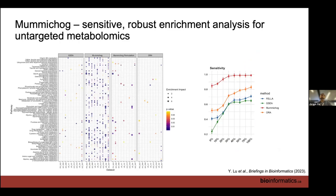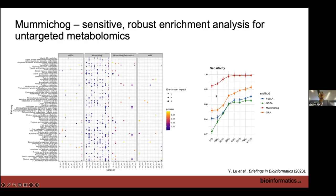We validated MUMMICHOG against other tools, including a GSEA-adapted approach, and found MUMMICHOG is much more sensitive — it's specifically designed for metabolomics. In simulation results, at about 13% accurate annotation, we achieve 95–98% recall of perturbed pathways. We know the ground truth because we did the simulation. This is quite satisfying — using high-resolution untargeted metabolomics, we can get functions very accurately, even though individual compound annotations may not be accurate.